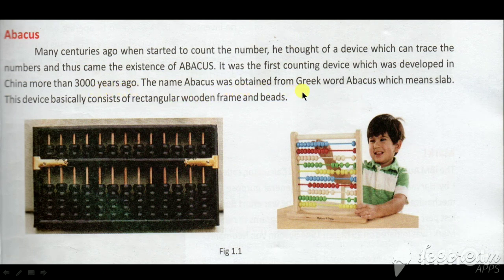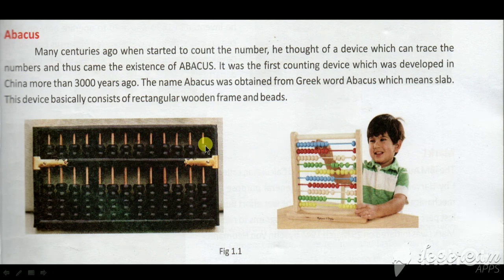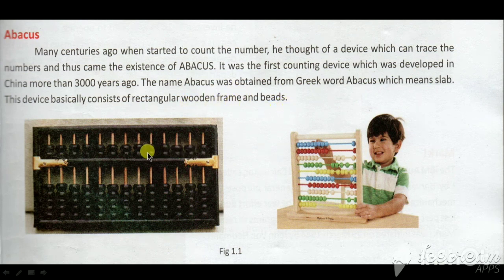Abacus was derived from the Greek word 'Abax' which means 'slab'. Abacus has two slabs — one representing heaven and the other representing Earth — and counting was done using pebbles. This makes it the world's first calculating device.